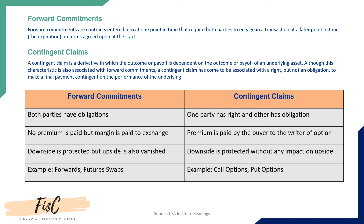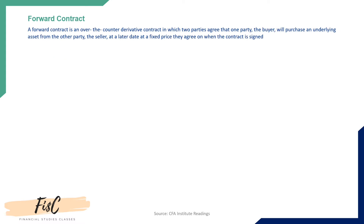We will begin with forward contracts. Forward contracts are over-the-counter contracts in which two parties agree to do a transaction at a future date based on the deal they are doing right now. There are two types: a deliverable forward, in which the underlying asset is delivered from one party to the other, and a cash-settled forward.